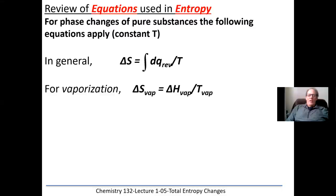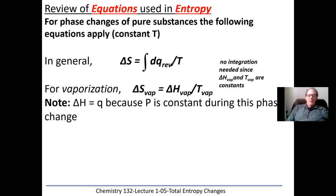This gives us an equation that says delta S for vaporization equals delta H for vaporization divided by the temperature of the vapor — keeping in mind that dQ reversible is equal to delta H for the vapor. We don't need any integration for this equation simply because they're constants. Delta H vaporization is a constant, and the temperature at which that liquid turns into a gas is also a constant.